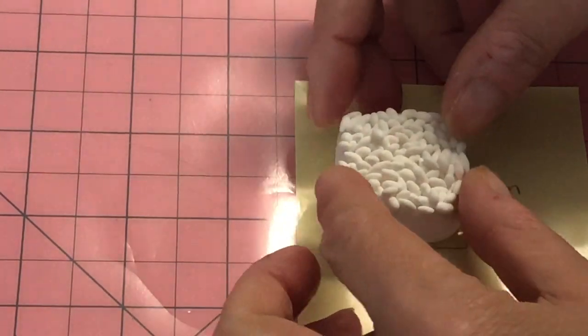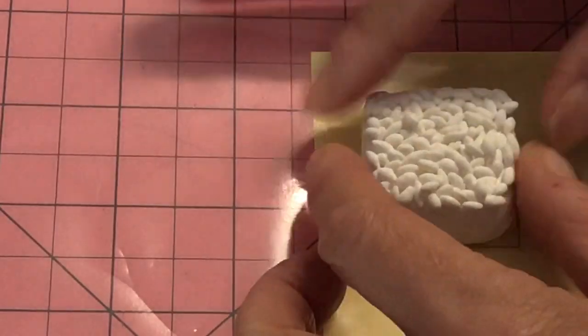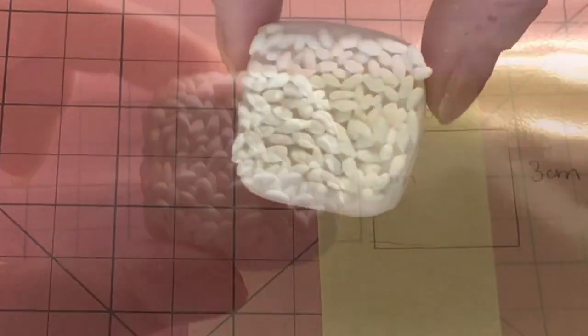Place it on top. Now continue rolling grains of rice to cover all four sides of the block.